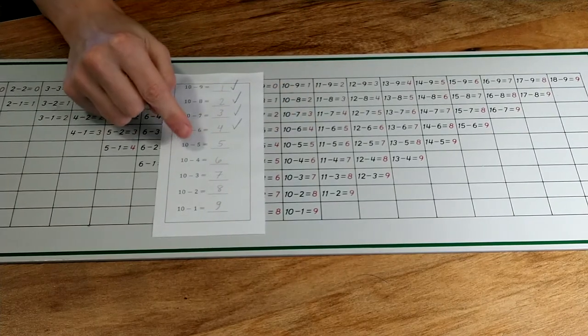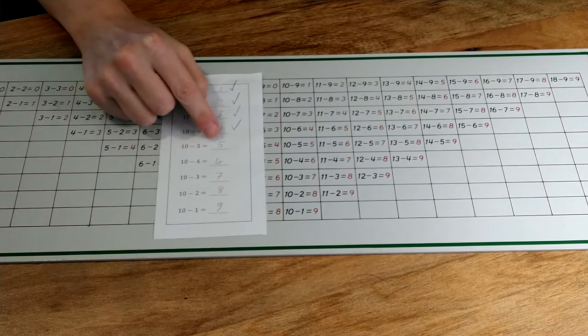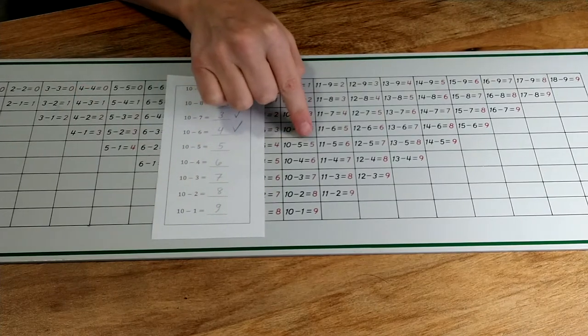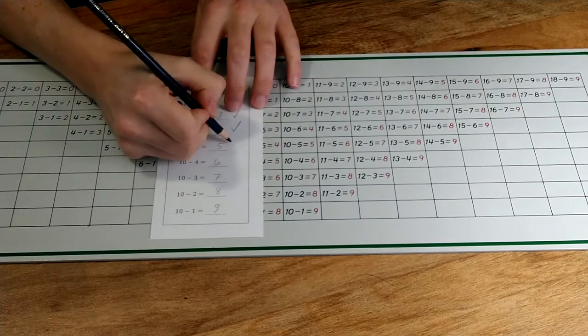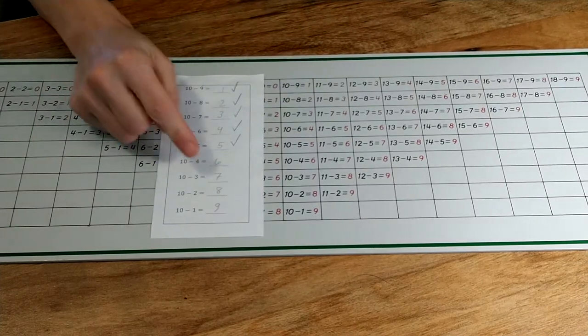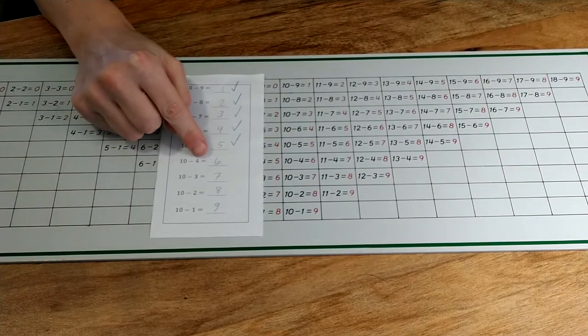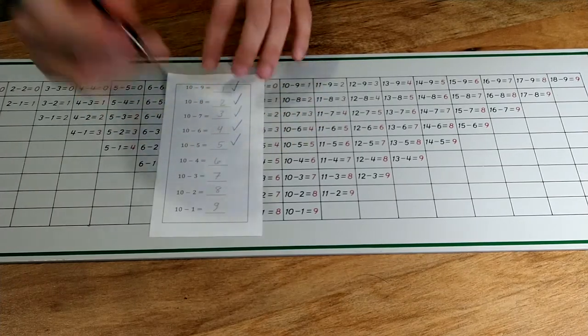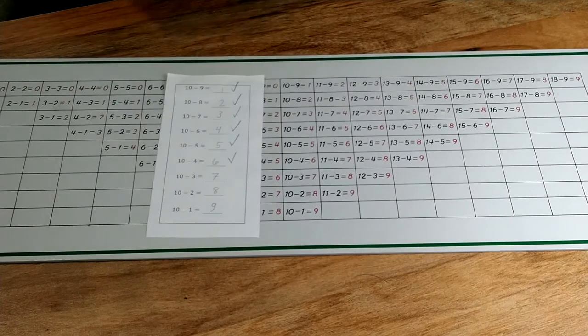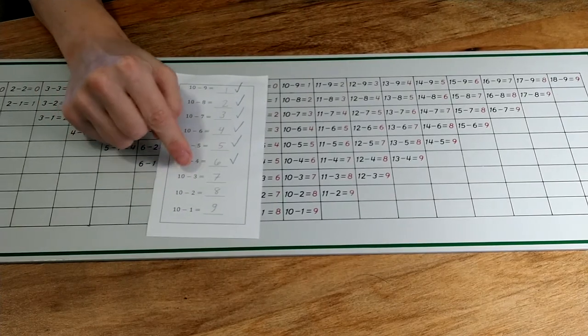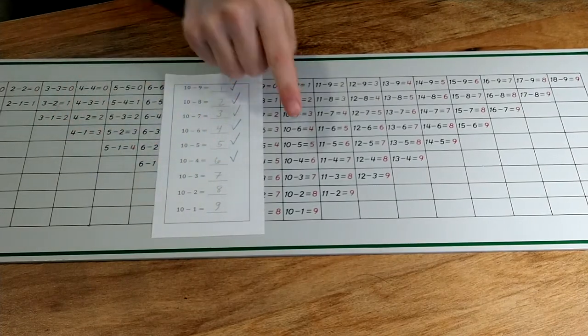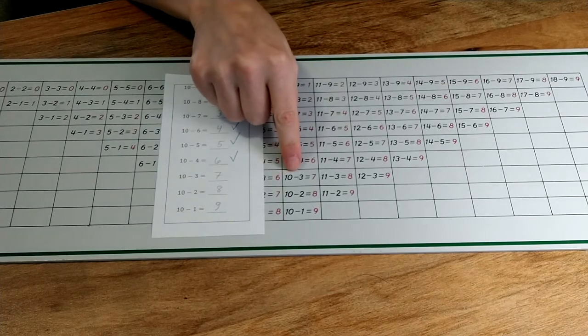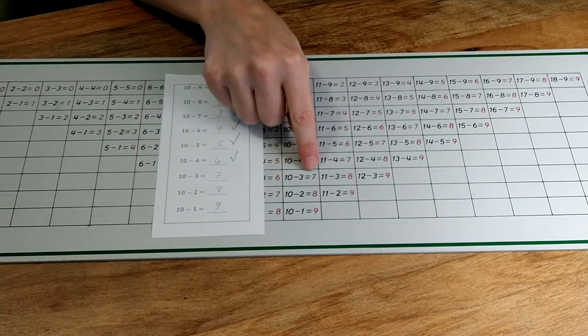Ten minus five equals five. Ten minus five equals five. Ten minus four equals six. Ten minus four equals six.